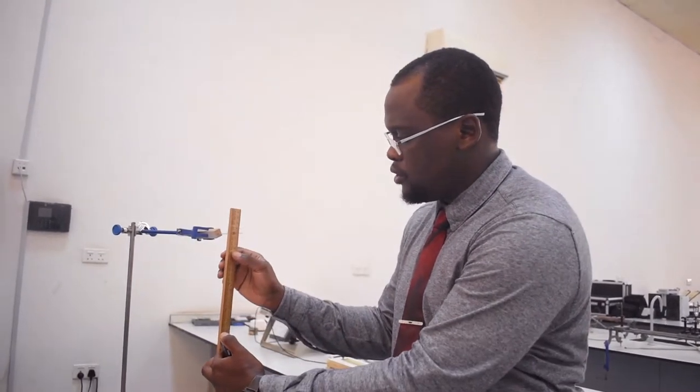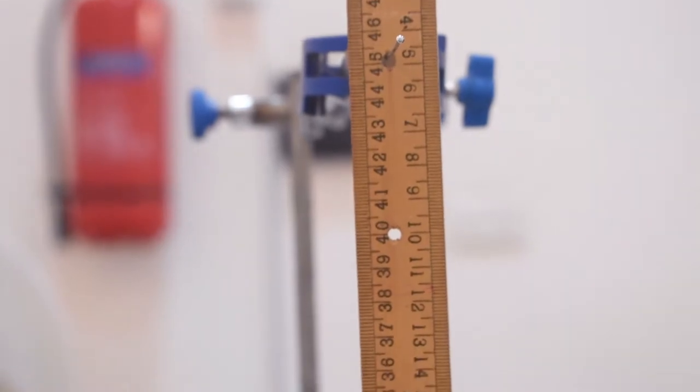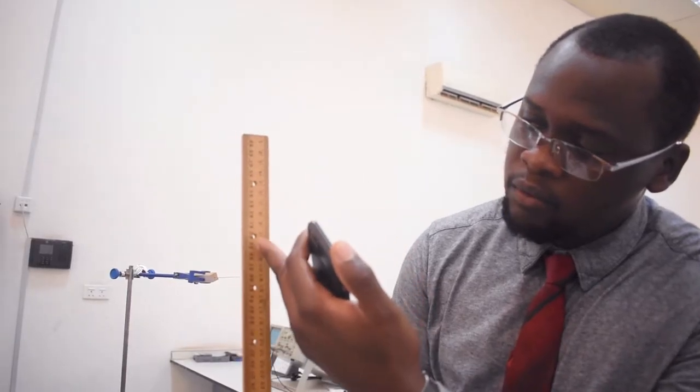The procedure: if you look at my meter rule, it has been drilled in spaces of 5 cm to about 40 cm. We are starting with 5 cm, then move to 10 cm, 15 cm, 20 cm, 25 cm which is the center of mass, 30 cm, 35 cm, 40 cm, and 45 cm.